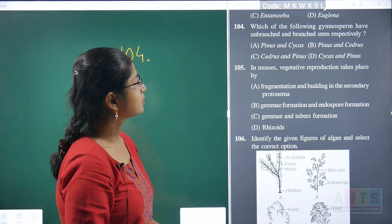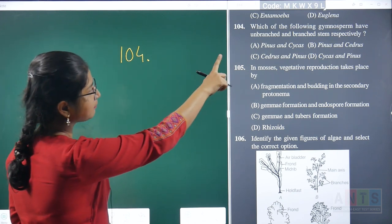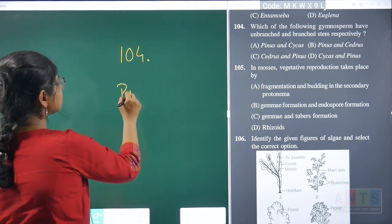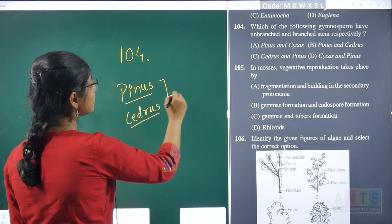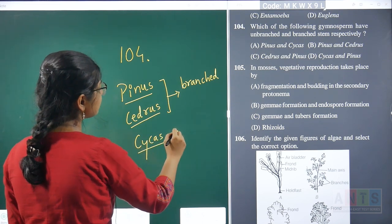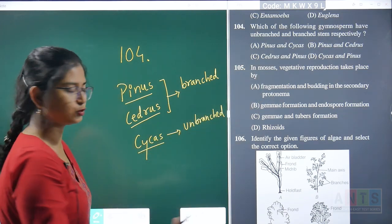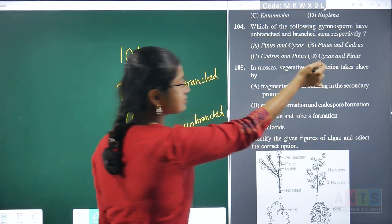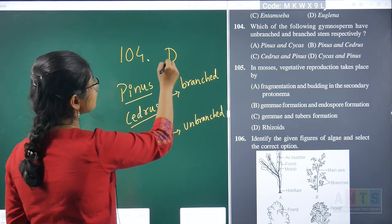Question 104: which gymnosperm has unbranched and branched stem respectively? Among the options — pine, cycas, cedar — pinus and cedrus both have branched stems, while cycas has an unbranched stem. Since the question asks for unbranched and branched respectively, the answer is cycas and pinus. Hence, question 104's correct answer is option D.